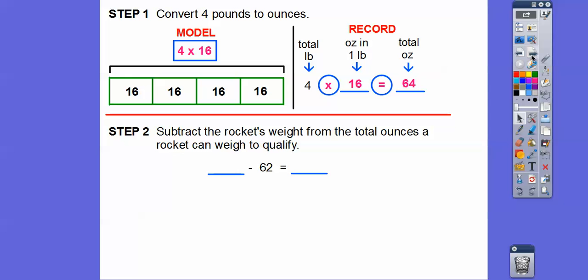All right, so we're going to subtract the rocket's weight from the total ounces of the rocket that can weigh to qualify, okay? So the rocket, remember his rocket weighs 62 ounces so far, and the maximum weight can be four pounds or 64 ounces. So we're going to put in 64 minus the 62 equals two.